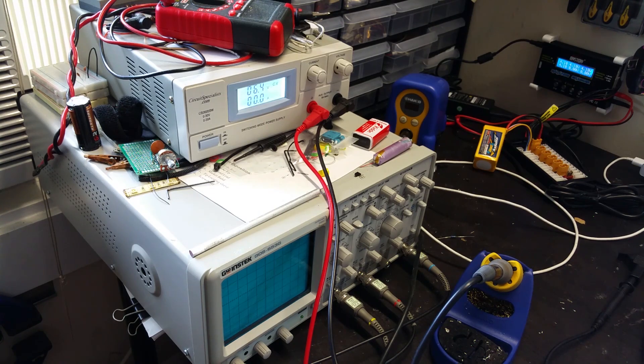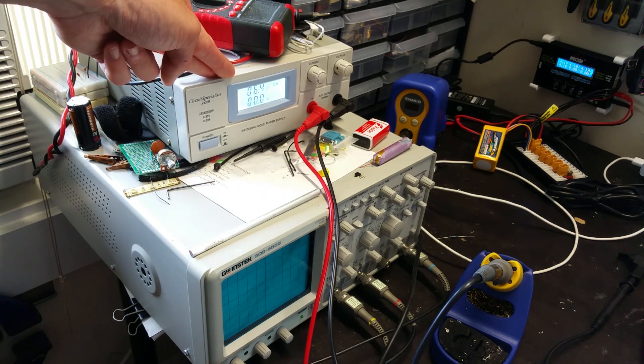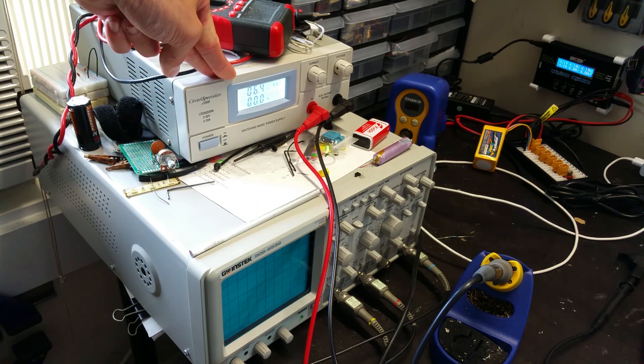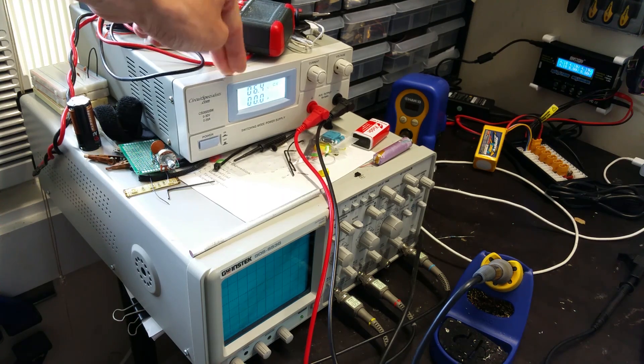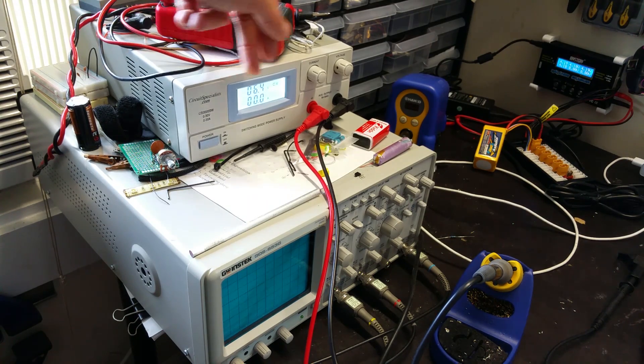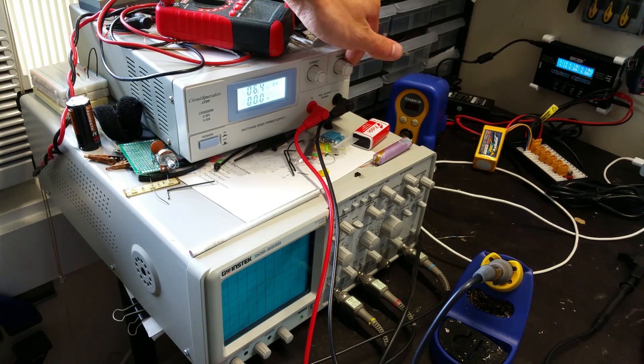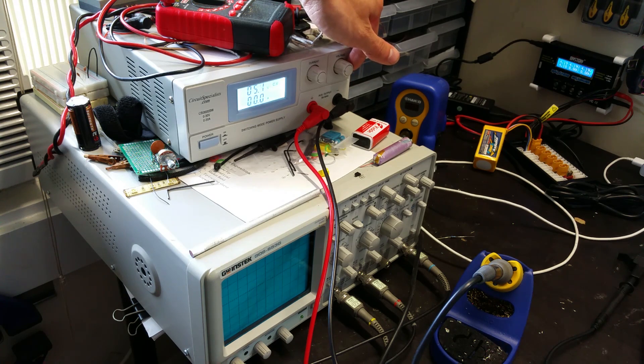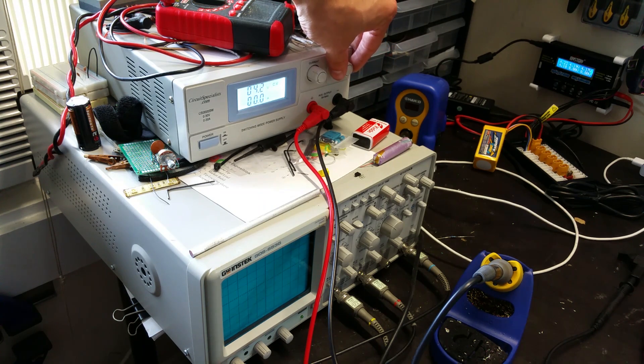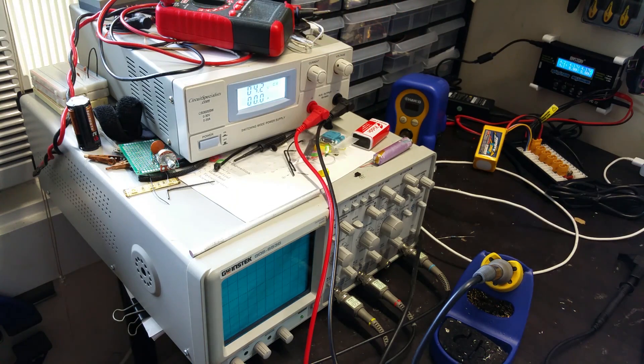The most important thing you'll need to try and recover the cells is some sort of constant current capable power supply. So this one over here is just my standard power supply that I use. The first thing you'll want to do is set it to 4.2 volts, because that's the maximum voltage that a LiPo cell will want to be at. So we have 4.2 volts there.